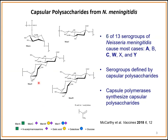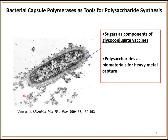Serogroups A and C consist of homopolymers, meaning their capsular polysaccharides consist of repeats of one single sugar, as well as X. The other serogroups, W and Y, contain heteropolymers. In my lab we want to use these capsule polymerases as tools for polysaccharide synthesis, exploring two avenues: using these enzymes to synthesize sugars as components of glyco-conjugate vaccines, and using them to make polysaccharides for engineering new biomaterials for heavy metal capture.